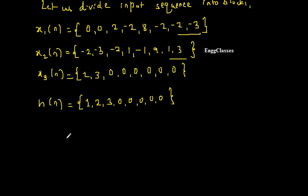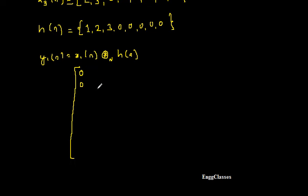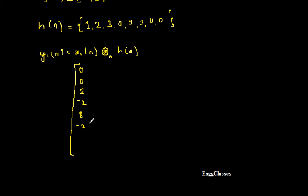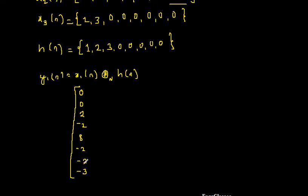So now everything is ready and I can find the circular convolution. y1[n] equals x1[n] circularly convolved with h[n]. I will use the simple matrix method. I write x1[n] vertically in the circulant matrix: the first column is 0, 0, 2, minus 2, 8, minus 2, minus 2, minus 3. Then for each subsequent column, I take the last element, write it at the top, and shift everything down by one position, generating all 8 columns of the circulant matrix.